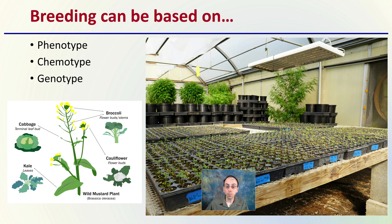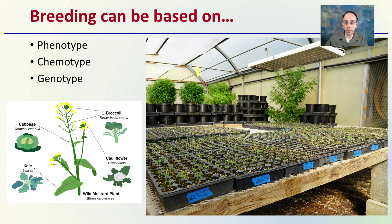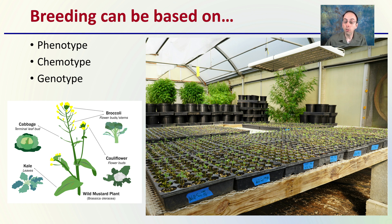Breeding can be based on three main categories. Phenotype is basically how the plants look. Chemotype is the chemical profiles that the plant produces. And genotype refers to the actual genetics. All of these are different strategies for breeding.